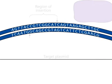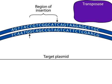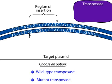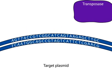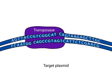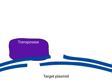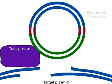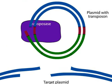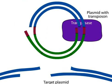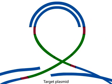In the target plasmid, transposase acts at the region of insertion. The target plasmid is cleaved by transposase to yield staggered ends nine nucleotides apart. Transposase also cleaves the plasmid containing the transposon at the ends of the transposable element. These ends are joined with the ends of the target plasmid.